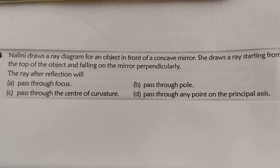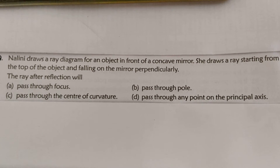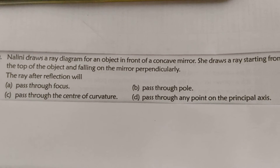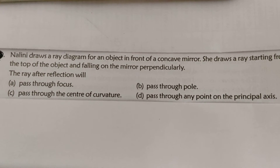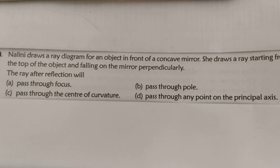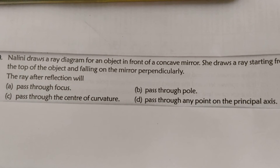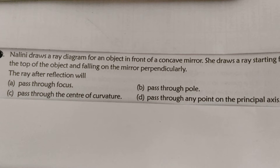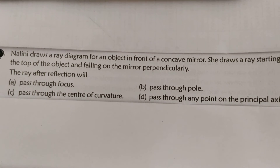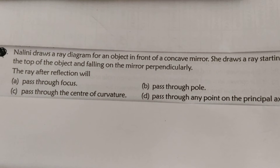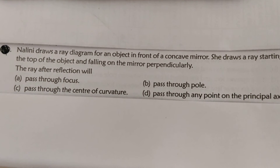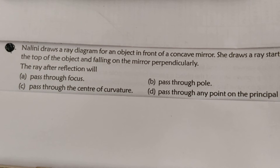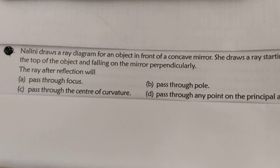The second MCQ: Nalini draws a ray diagram for an object in front of a concave mirror. She draws a ray starting from the top of the object, falling on the mirror perpendicularly. The ray after reflection will — pass through focus, pass through pole, pass through the center of curvature, or pass through any point on the principal axis? The incident ray is incident perpendicularly, meaning it is either passing through the center of curvature or appears to be coming from it, because perpendicularly means normally. The normal at any point on a spherical surface is its radius.